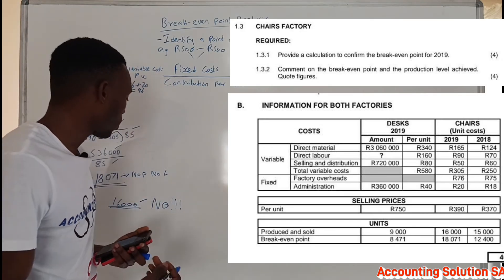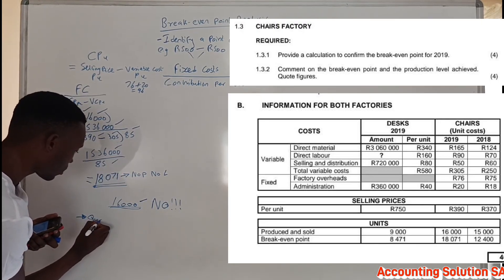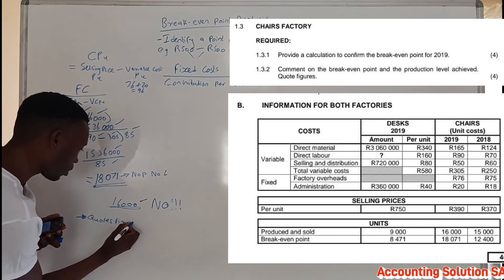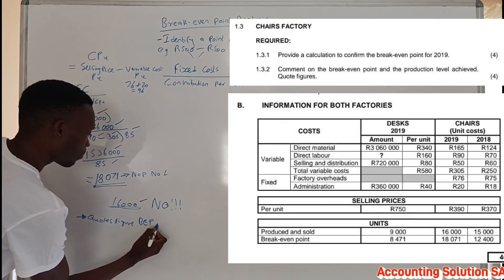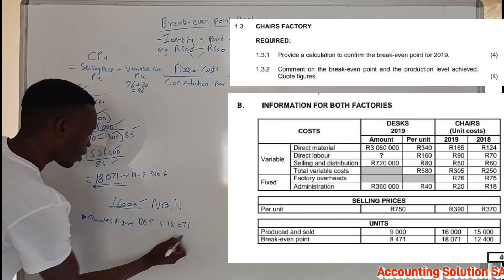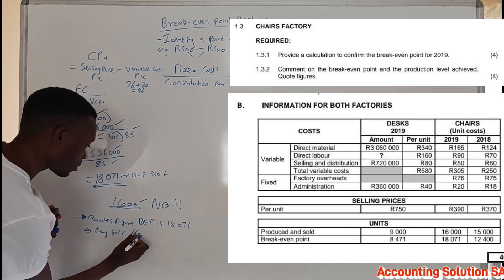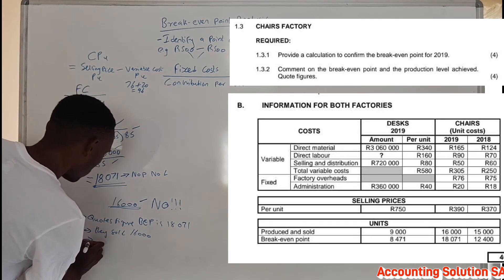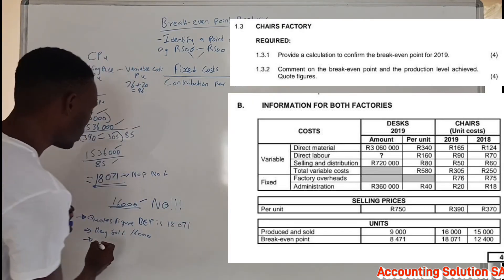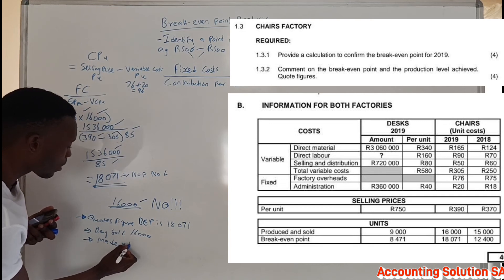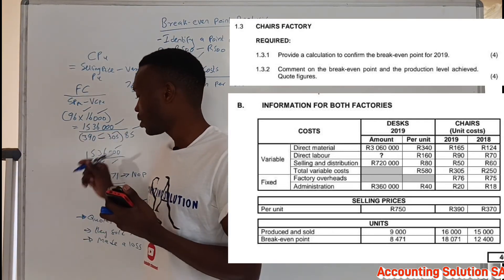When writing the comment, you need to quote the figures. First state that the break-even point is 18,071 units. Then state that they sold 16,000 units. Finally, comment based on your understanding of break-even point — this company made a loss, and no profit was made. This is how you should analyze a break-even point.